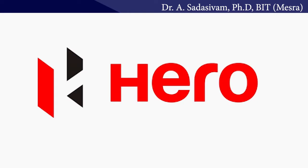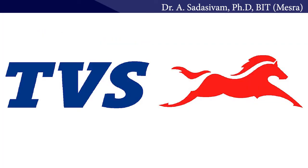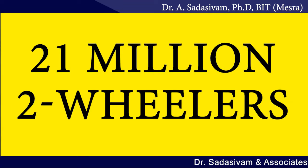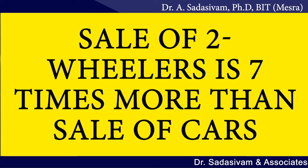The second variable as far as the consumer economy is concerned is two-wheelers. The four most important companies are Hero Motor Company, Bajaj, TVS, and Suzuki. A total of 21 million two-wheelers are sold in the country every year. As a ballpark figure, the sale of two-wheelers is seven times more than the sale of cars — car sales are 3 million and two-wheelers are 21 million.